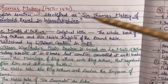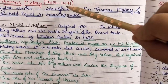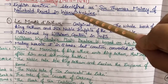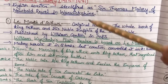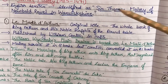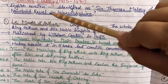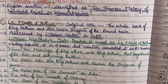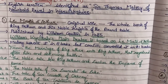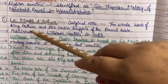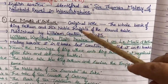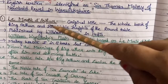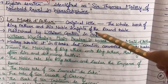Thomas Mallory's lifespan is from 1415 to 1471. He was an English writer and is identified as Sir Thomas Mallory of Newbold-Revel in Warwickshire. The most important work of Thomas Mallory is Le Morte d'Arthur. His original title is The Whole Book of King Arthur and His Noble Knights of the Round Table.